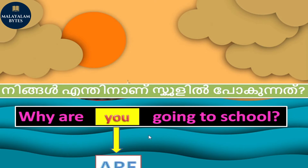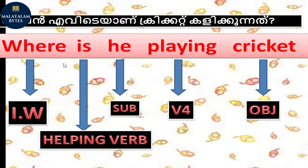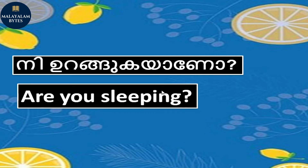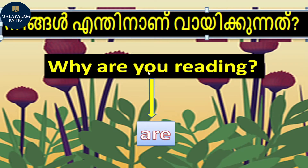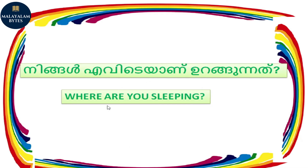Example: 'Why are you going to school?' Are you sleeping? Why are you reading? Here the subject is you, so we use 'are'. How are you reading? Where are you reading? Where are you playing? Where are you sleeping?